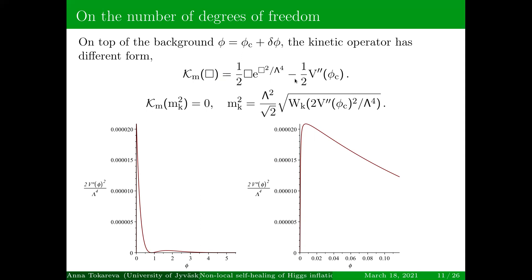This happens because you need to solve an equation with respect to box to find the masses of the extra fields, and this equation has an infinite number of roots. For the exponent of box squared, it's described by an Airy-type function. These values are complex, and they depend on the second derivative of the potential. So on top of the background, these fields arise.